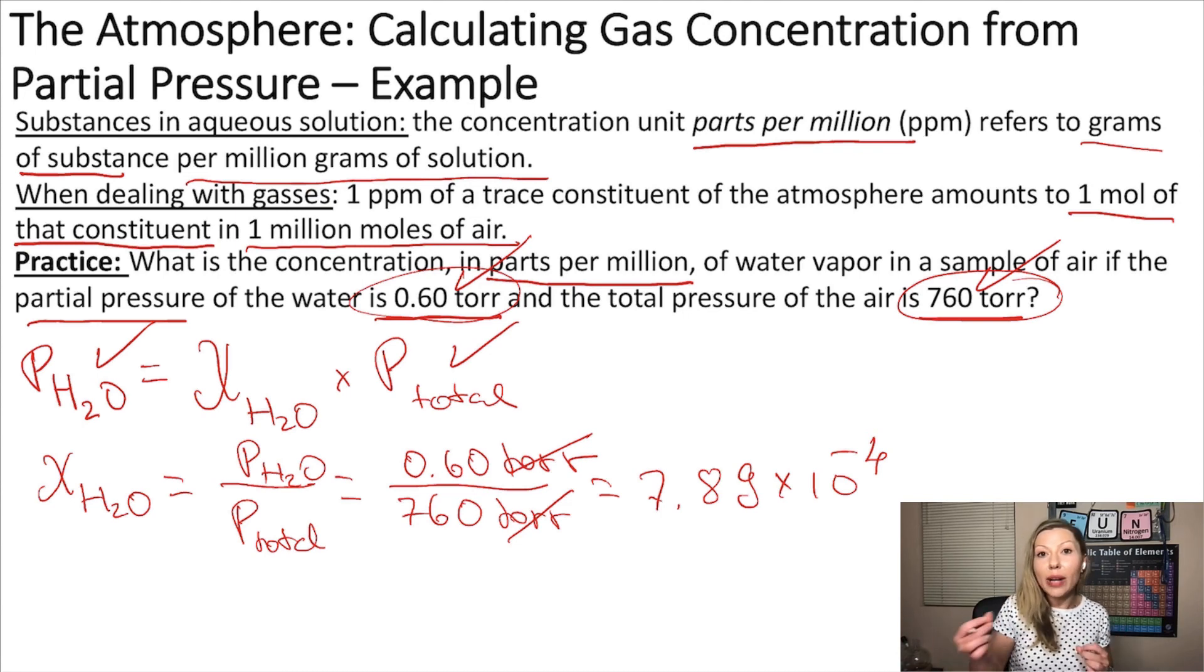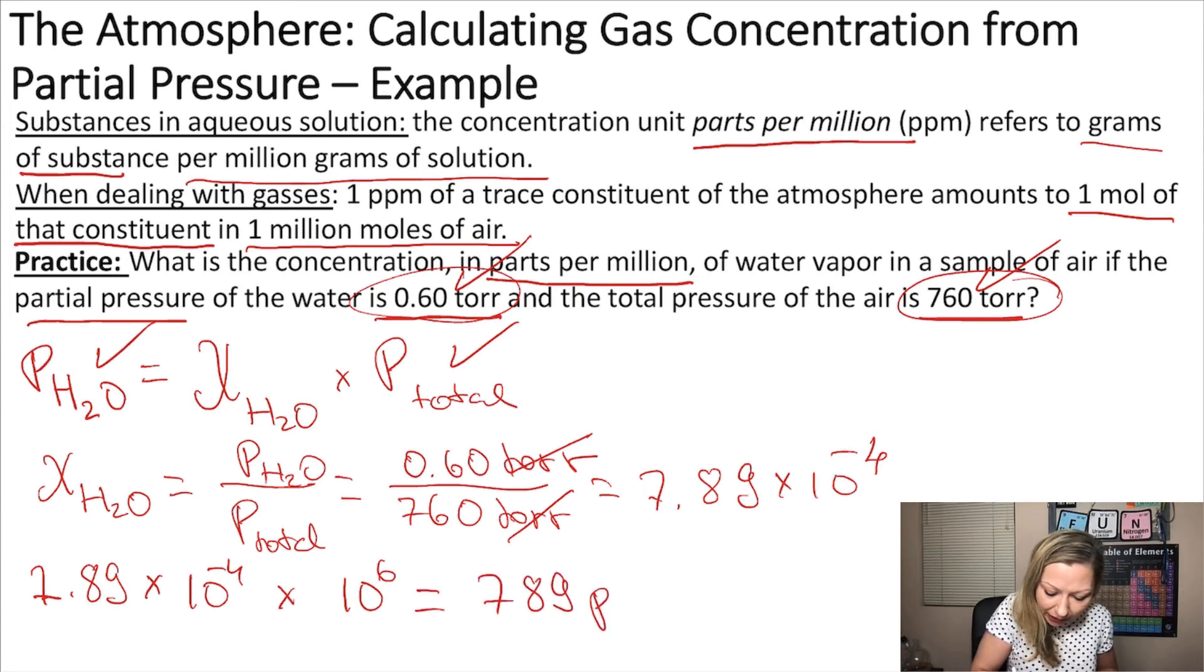How do I calculate ppm from here? I simply multiply it by 10 to the sixth, a million. So 7.89 times 10 to the negative fourth multiplied by 10 to the sixth gives us 789 ppm.